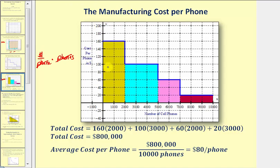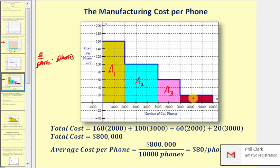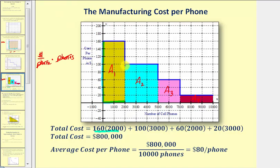Now let's find the area of each rectangle, then find the total area. We'll call these area sub one, area sub two, area sub three, and area sub four. The area of the first rectangle is 160 times 2,000. Next we'd have 100 times 3,000. Then 60 times 2,000. And finally 20 times 3,000. The sum of these products, which gives us the total area, comes out to 800,000, which represents the total cost of producing these 10,000 phones.